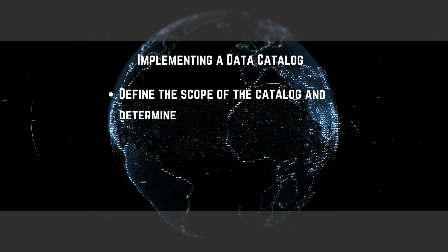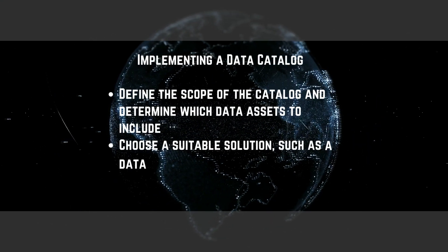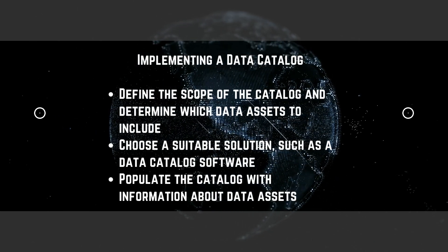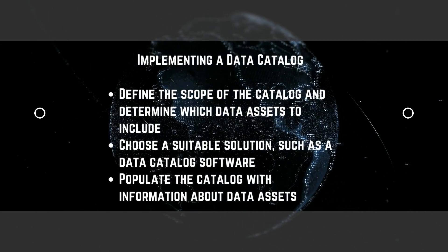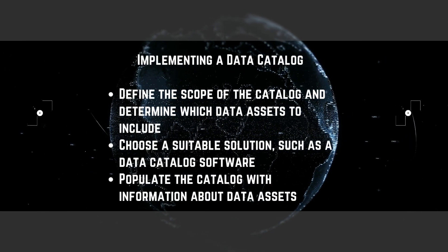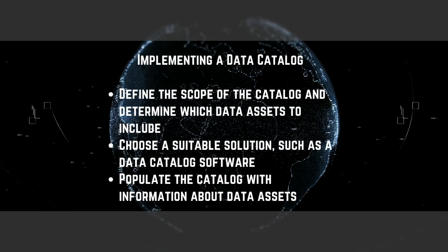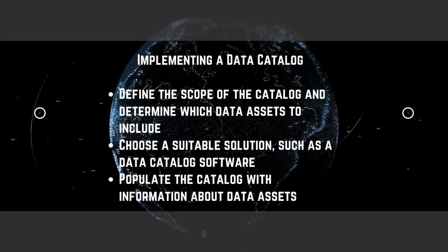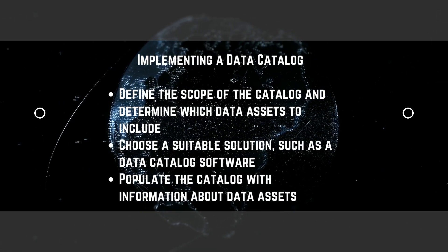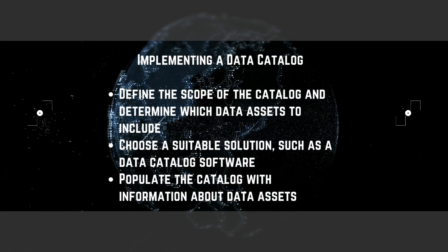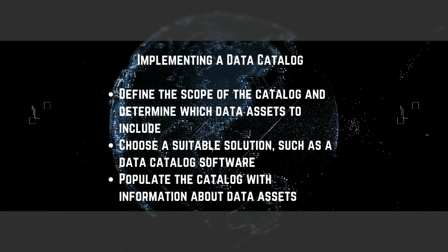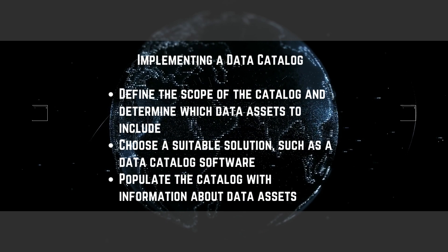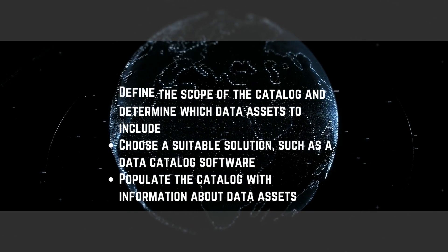So, how can organizations implement a data catalog? The first step is to define the scope of the catalog and to determine which data assets should be included. Next, organizations should choose a suitable solution, such as a data catalog software, to store and manage the information in the catalog. Once the solution has been chosen, organizations should populate the catalog with information about their data assets, including data definitions, data sources, data quality metrics, and data lineage information.